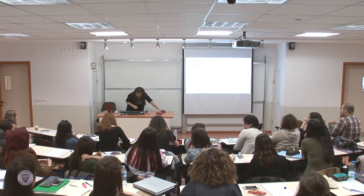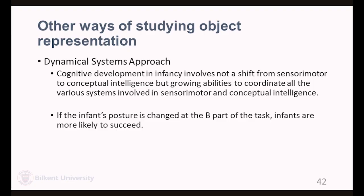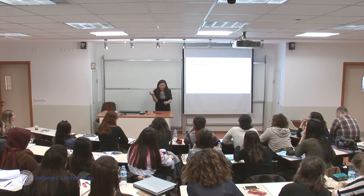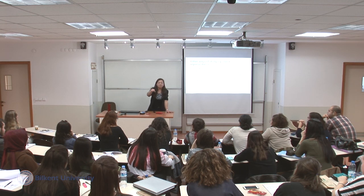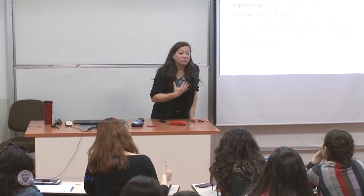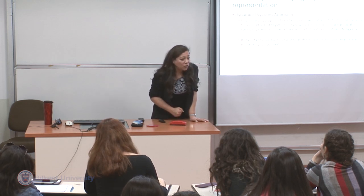Other ways of studying object representation include the dynamical systems approach. This approach claims that cognitive development in infancy involves not a shift from sensorimotor to conceptual intelligence, but growing abilities to coordinate. All of those actions were actually interdependent in dynamical systems theory — the systems were integrated. For example, if the infant's posture is changed at the B part of the A-not-B task, infants are more likely to succeed. Memory is part of this, but the infant's own body and its own affordances at that point in time are also important.